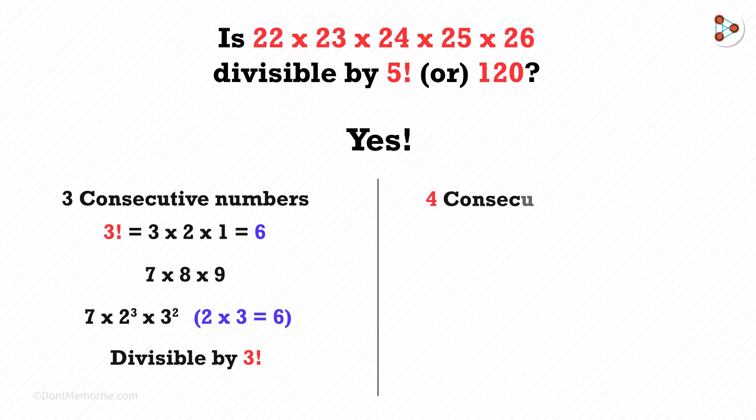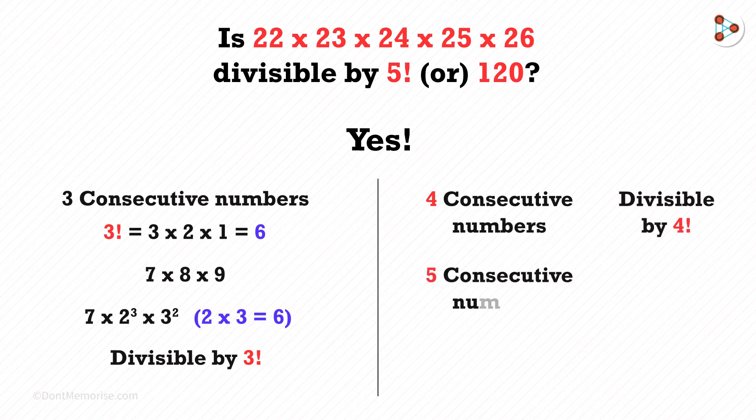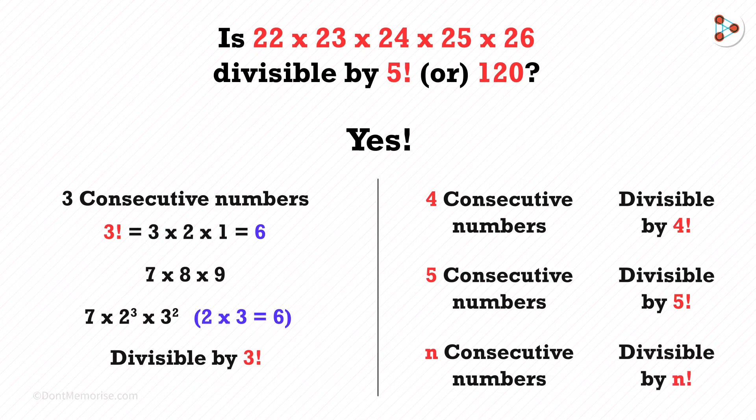Similarly, 4 consecutive natural numbers product is 4 factorial divisible. And 5 consecutive natural numbers product is 5 factorial divisible. Basically, when we get n consecutive natural numbers product, then the product is n factorial divisible.